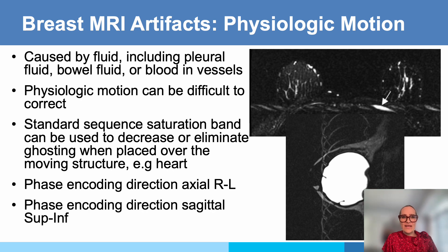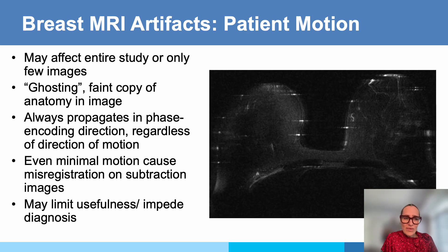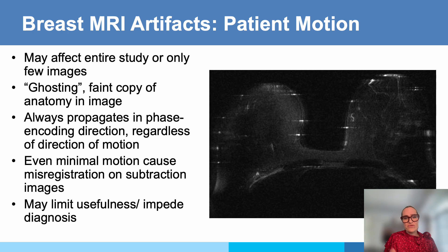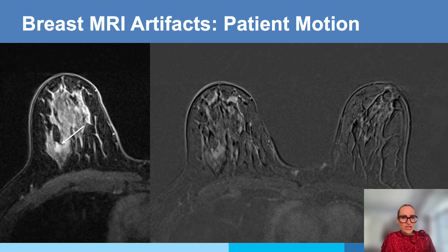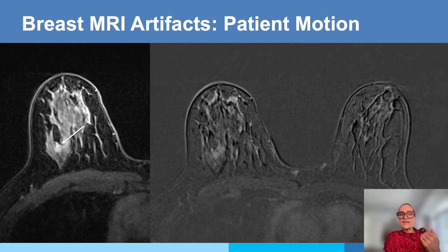Even minimal motion will cause misregistration, particularly evident in subtraction artifacts, which may limit usefulness. Patient instruction is usually the best mitigation. Here is an example where we have patient motion — the subtraction image was not optimal, but we have the source image with fat suppression where we can see the lesion and go back to the subtraction. In this case it was a small fibroadenoma that we then also saw on ultrasound.